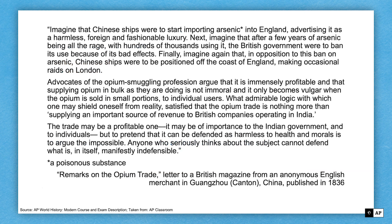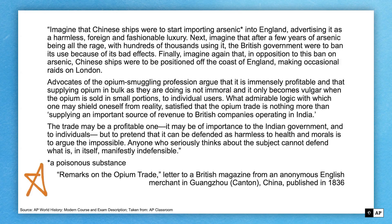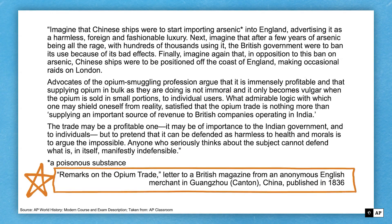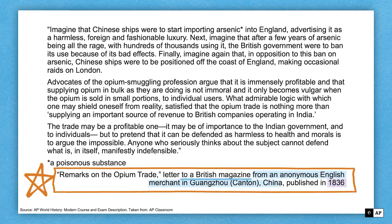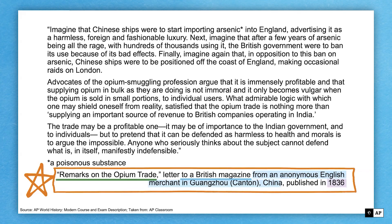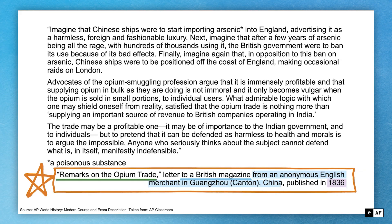Let's get into our first question set. There are two multiple choice questions based on this passage. We're going to follow the process I just talked about — identify the source information first. Zero in on the date: 1836. Now we know when we are. This is a letter to a British magazine from an English merchant in China, so it's a communication originating in China in the early to mid-1830s.